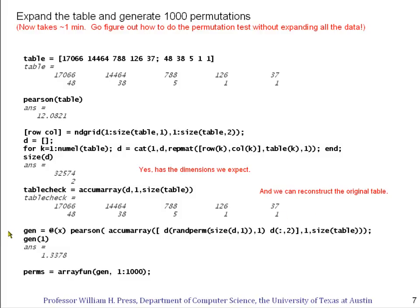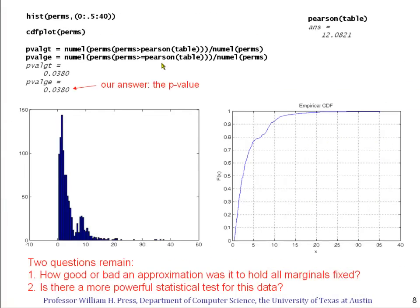Here's our function now for generating one permutation. Looks pretty much the same, except it has Pearson out here instead of Wald. Let's just generate one permutation. And we get an answer 1.3378. Ah, that seems pretty different from the Pearson value here. So maybe we're onto something. Maybe we've got a significant table here. But to find out, we actually have to generate a population of values of the Pearson statistic. A thousand of them. And we'll plot their histogram and their cumulative distribution function.